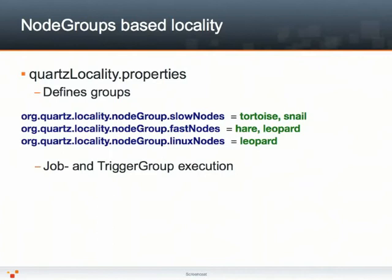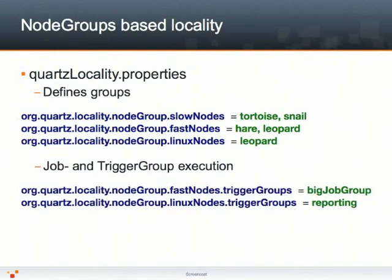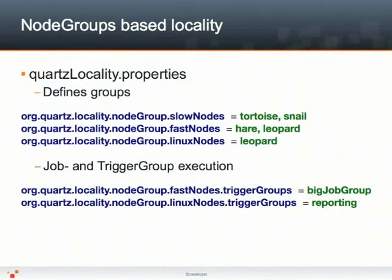Finally, we'll be assigning job execution to particular node groups based on the job group they belong to, or the trigger group that is actually firing that particular job. So for instance, we're going to tie all the triggers being part of the big job group to be fired on one of the fast nodes — basically hare or leopard. All the jobs being fired by a trigger that is part of the reporting group are going to be executed on the Linux nodes. As that node group only contains leopard, it means that all the reporting jobs are always going to be executed on the leopard node.